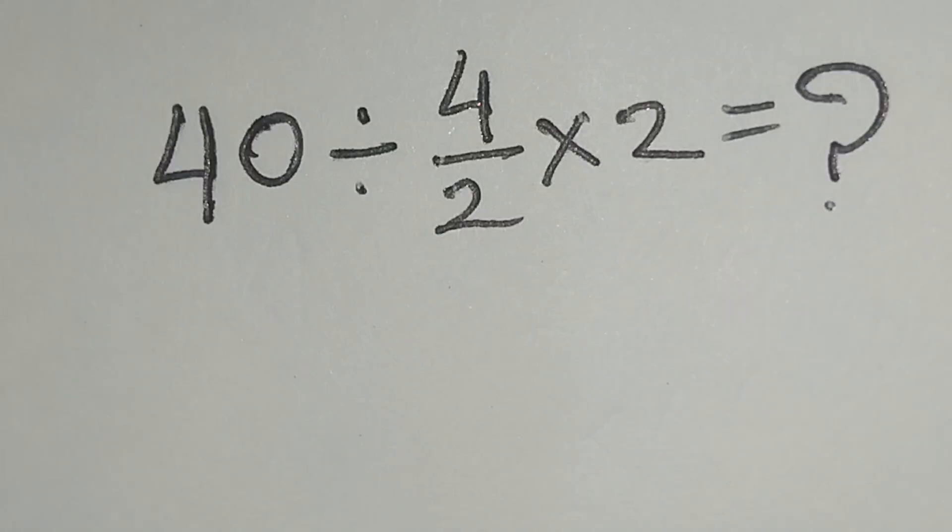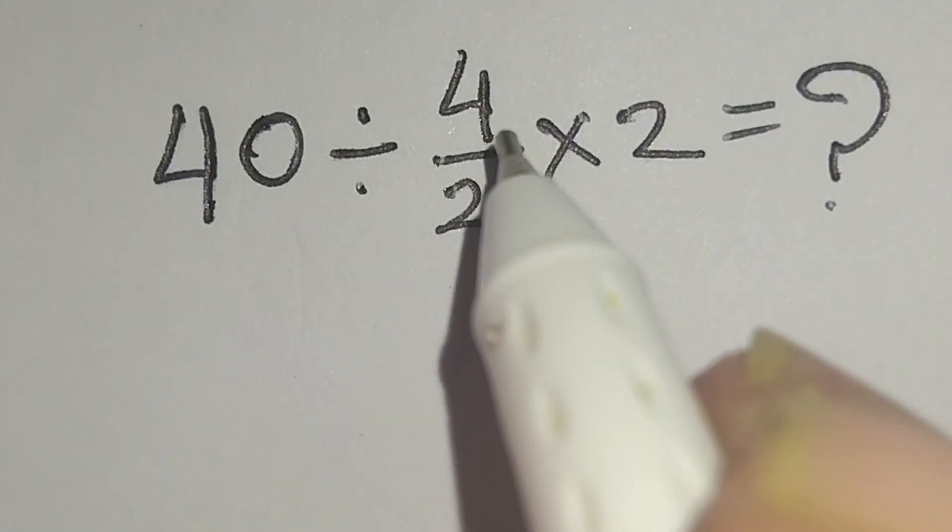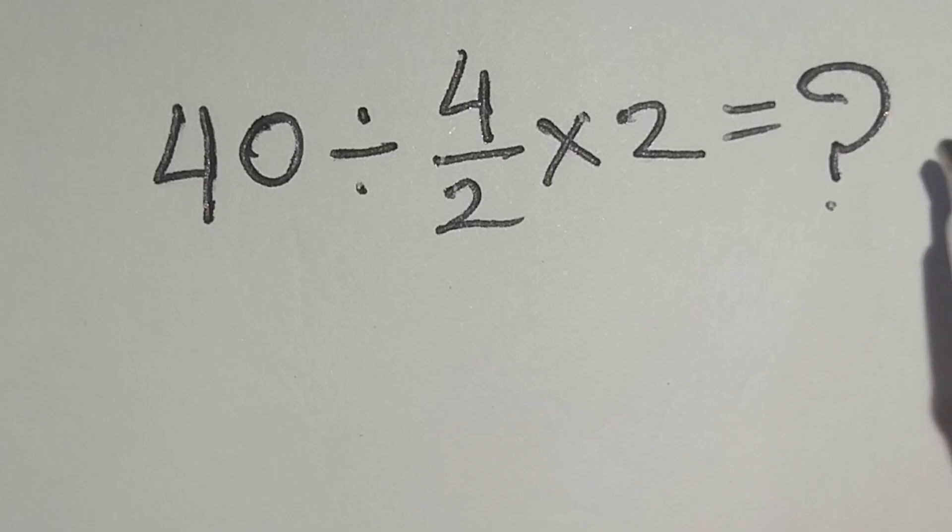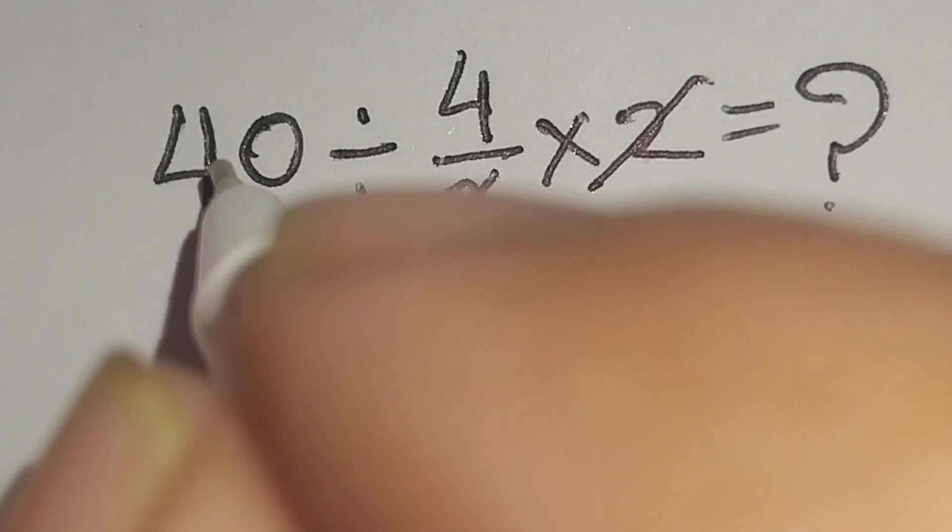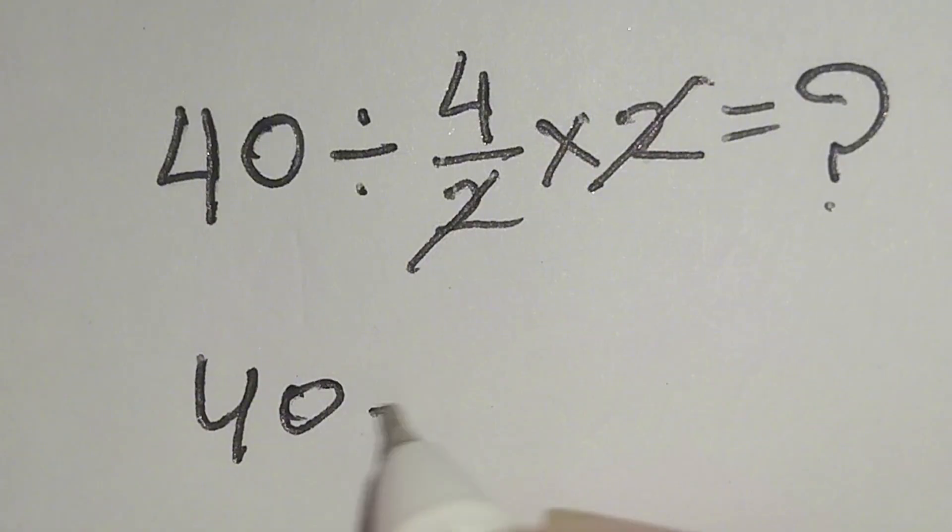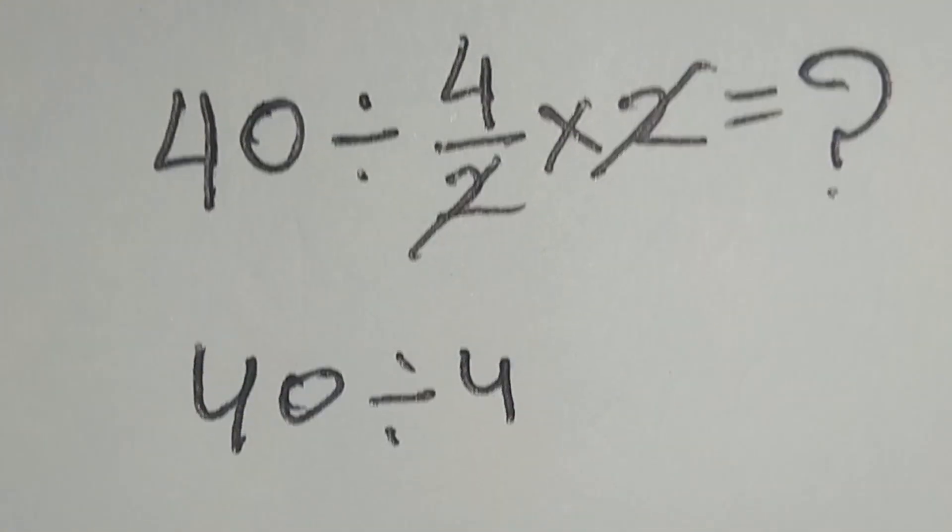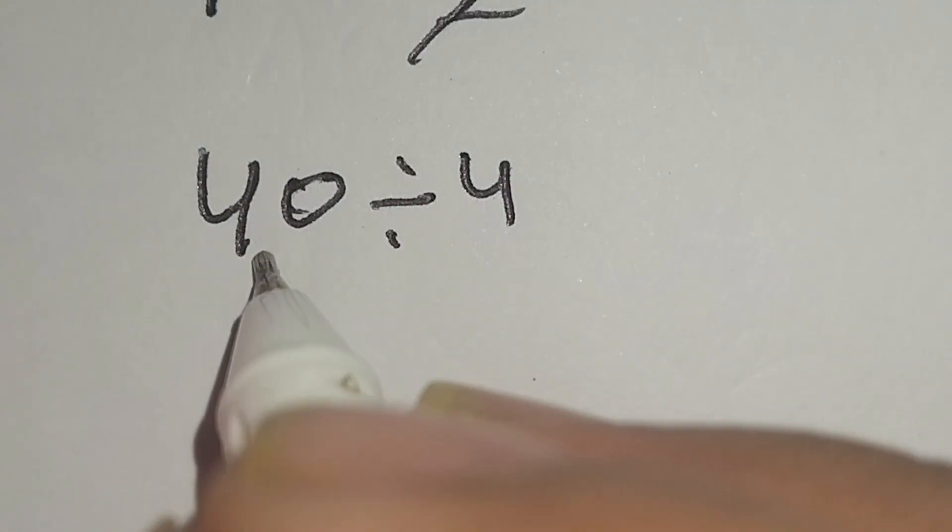Hi guys, this is a nice math problem: 40 divided by 4 over 2 multiply 2 equals what? Here, this 2 and this 2 cancel out. Here, this 40 divided by this 4, 40 divided by 4 gives us 10.